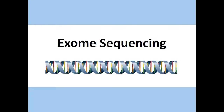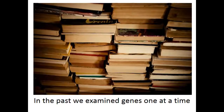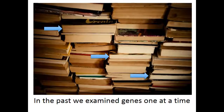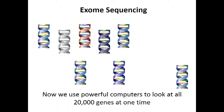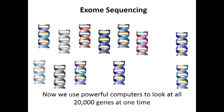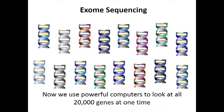This is a video about exome sequencing. In the past, we examined each of the 20,000 genes one by one for the genetic mutation that was the cause of the person's genetic disease. This took a long time. Now, we have the ability to look at almost all of our 20,000 genes at one time using powerful computers. This is called exome sequencing.